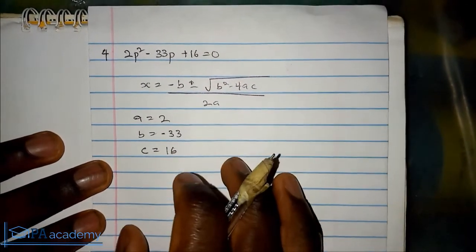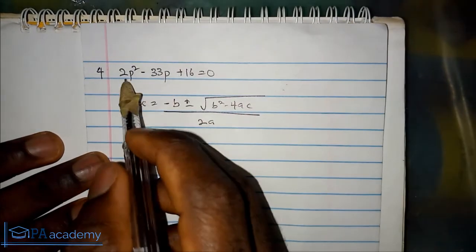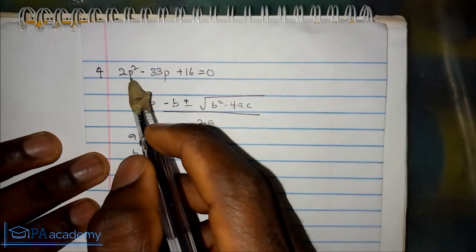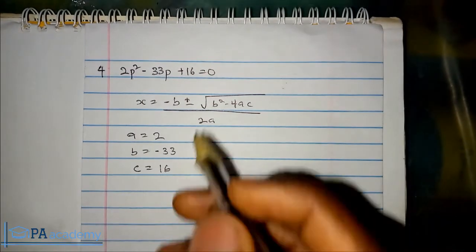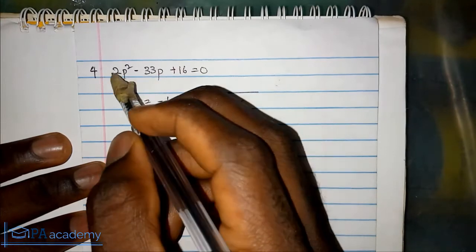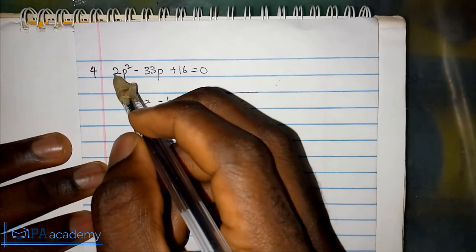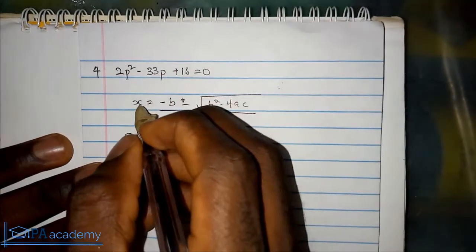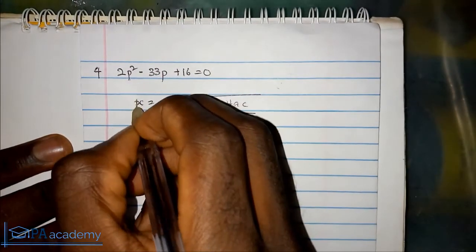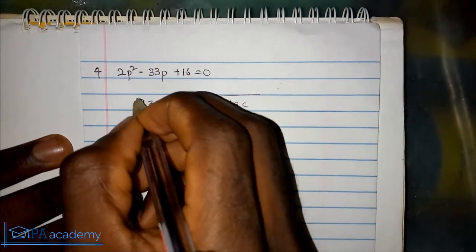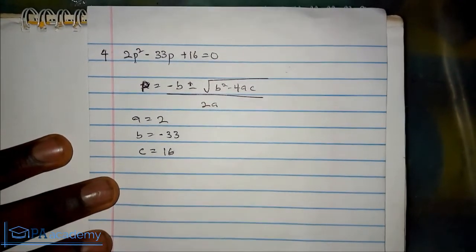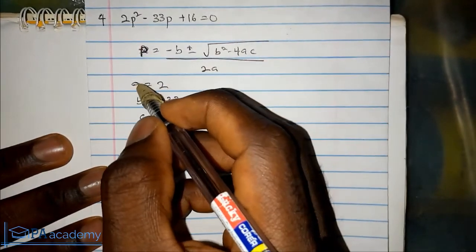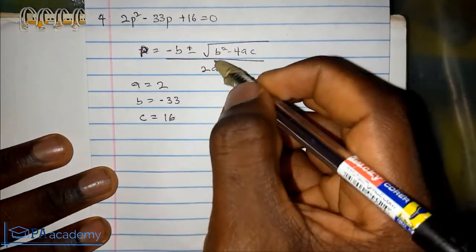Now if you notice something in the previous examples we have been solving, we were using x squared, but right now we are using p. So what I'm saying is it could be any alphabet. You can have 2m squared minus 33m plus 16. It's still the same thing. Since we are using p, let's make this p in the formula. Let's replace the value of a, b and c into the equation.